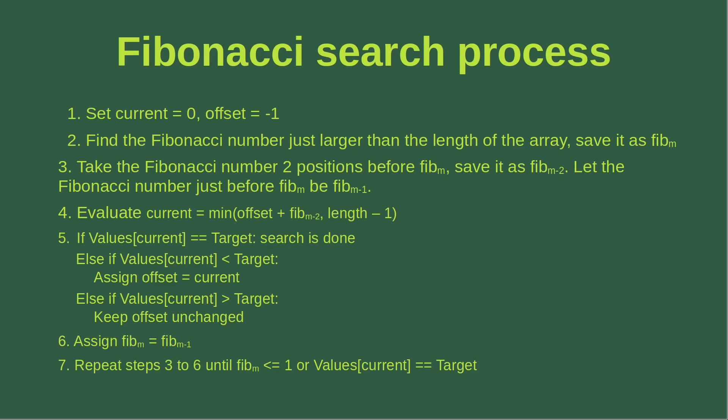I put that current index into the array to see if the current index gives me the target or not. If the current index gives me the target, then the search is done. Otherwise, I have to consider two cases. If the value corresponding to the current index is actually smaller than the target, then I change the offset to be just the current index. Else, if the current index points to a value that is larger than the target, then I keep the offset value unchanged.